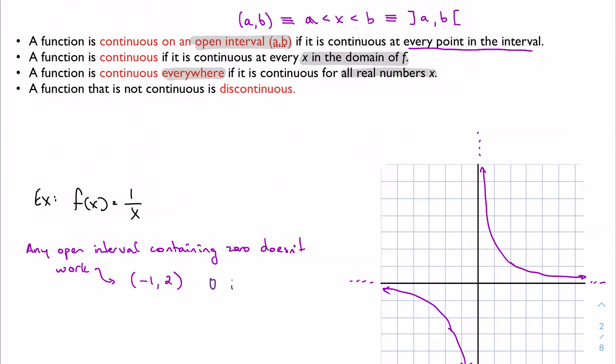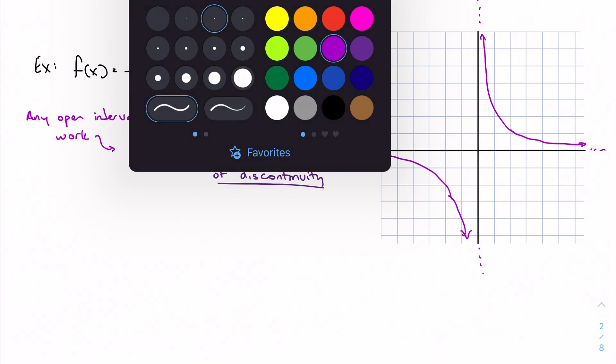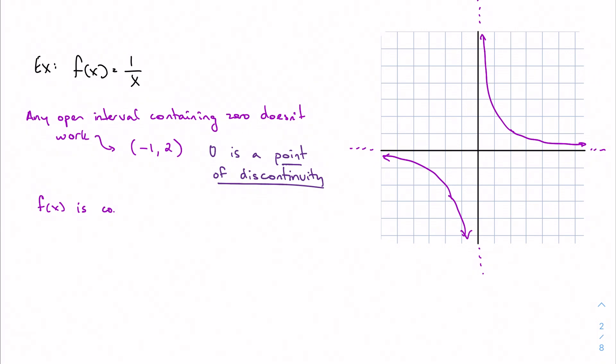We say that zero is a point of discontinuity. But we can say that the function is just generally continuous on its domain. If I look at its domain, which is all real numbers except for zero, and I intentionally leave out zero, then the function would be continuous. I take it in two halves, negative infinity to zero and zero to positive infinity. And on both of those chunks, it is continuous. Of course, we cannot say that it's continuous everywhere because we're excluding zero.